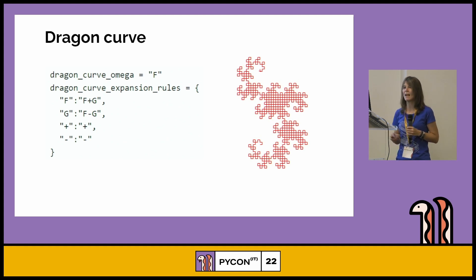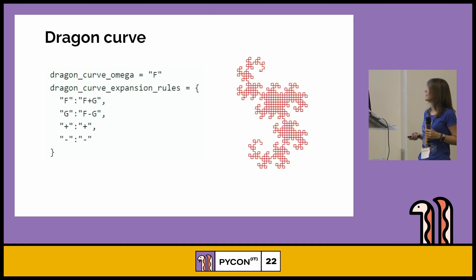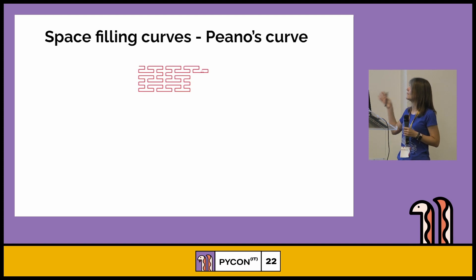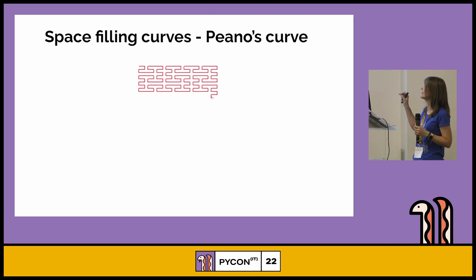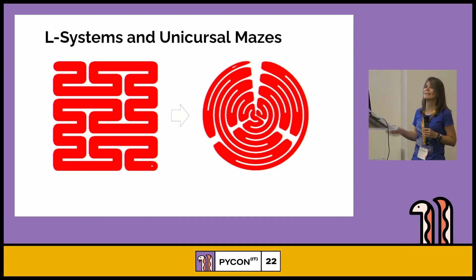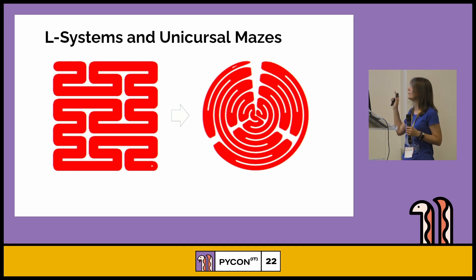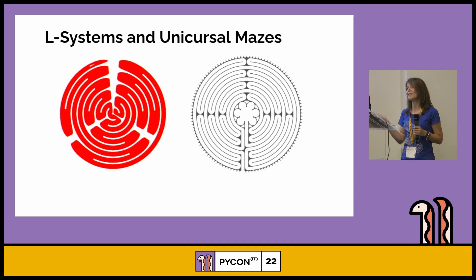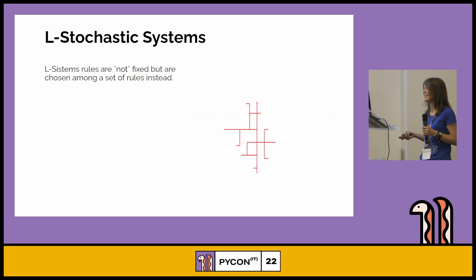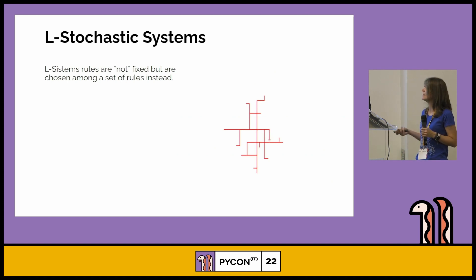You might ask why dragon curves are related to mazes. It turns out there is a very special Lindenmayer system defining space-filling curves — curves that cover every single point in space exactly once. If you take this curve and convert it to polar coordinates, you get an object on the right which is a unicursal maze, very similar to the one you might find in Lucca here in Tuscany. And if you want chaos, you can also define multicursal mazes by randomly varying the rules instead of using a fixed rule set.